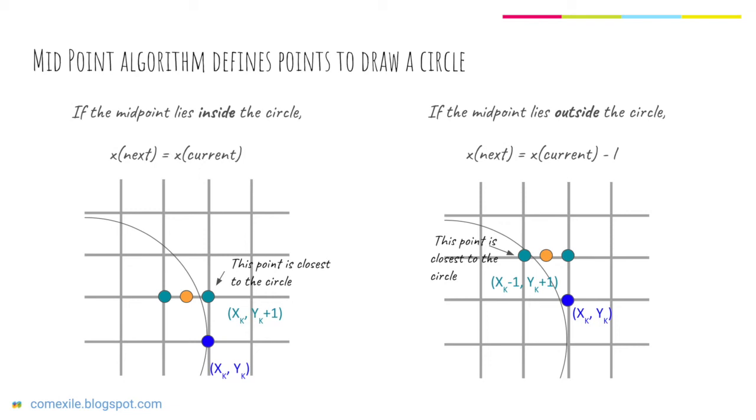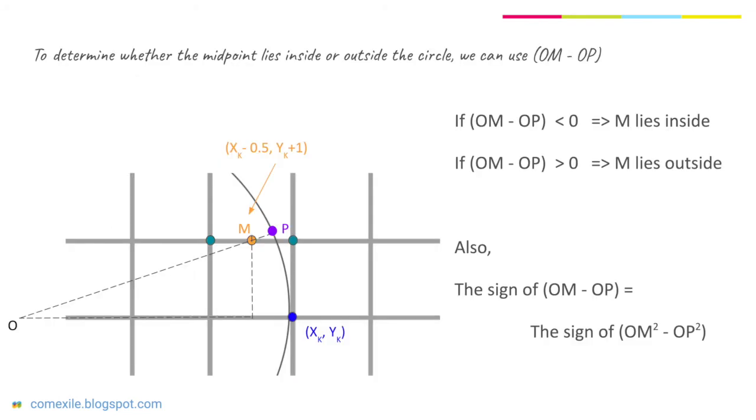We can also see that the next y-coordinate will always be the current y-coordinate plus one. So now it's a matter of determining whether the midpoint lies inside or outside the circle. For this we can use simple geometry and Pythagoras theorem.